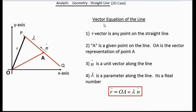Now let's look at the vector equation of a line. The equation of a line p q is to be obtained. Let r be the position vector of any point of the line. A point a is given on the line, so its vector is o a, which is a vector ending on the line p q. The unit vector along the line is also given — n hat is the unit vector along q p. So the r vector is o a plus lambda times n hat, where lambda is any real number. This is the vector equation of the line.